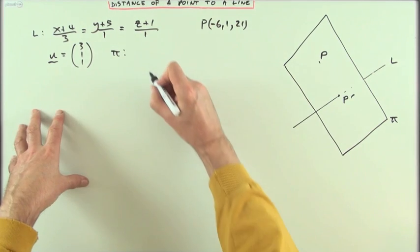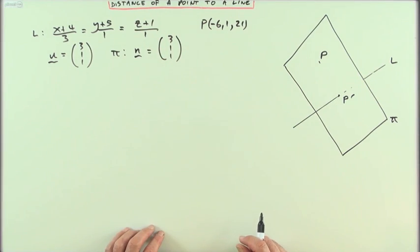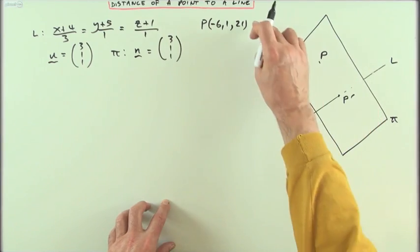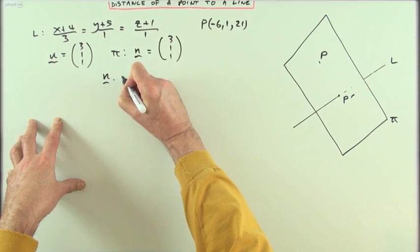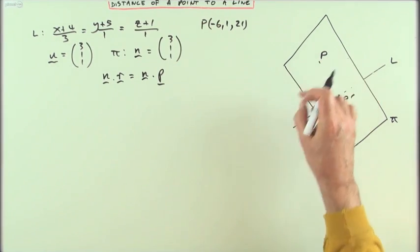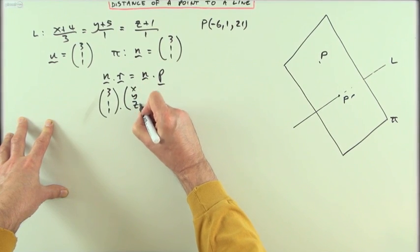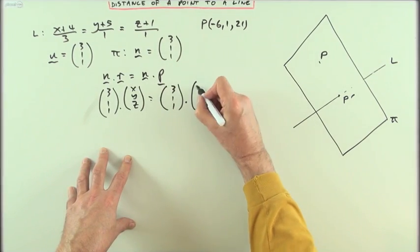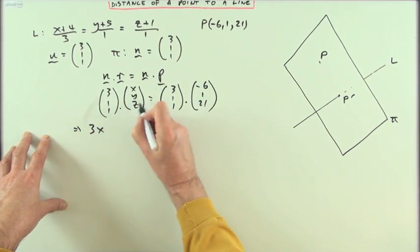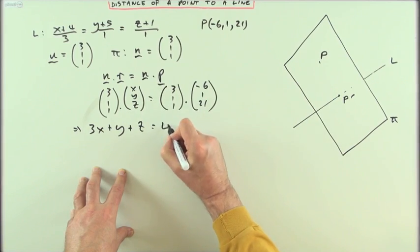The normal vector to plane π is also (3, 1, 1). Using the equation n · r = n · P, where · is the scalar product, we get: 3x + y + z = (3)(−6) + (1)(1) + (1)(21), which equals −18 + 1 + 21 = 4. So the equation of the plane is 3x + y + z = 4.